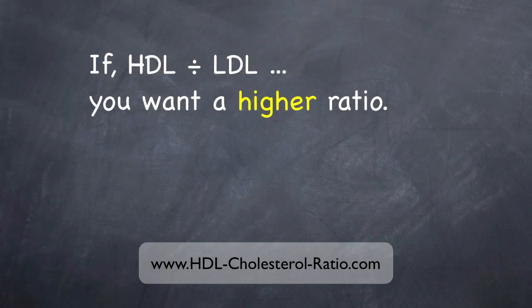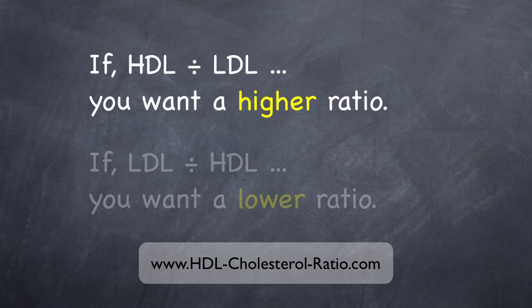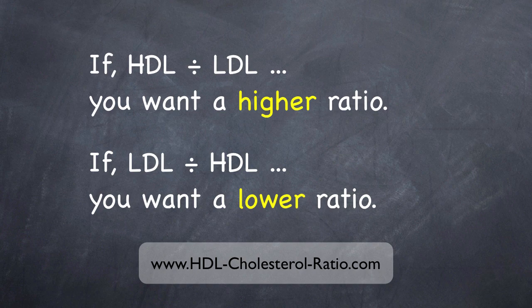For example, if you take the HDL as the numerator in this formula, you want a higher ratio. And the flip side of that is if you put the LDL number on top as the numerator, you want a lower ratio. What's happening is some people are calculating this ratio, then they're looking at a chart, and the chart is based on numbers as if the formula was flipped. So you've got to make sure that you're matching up how you calculate it with the proper chart.